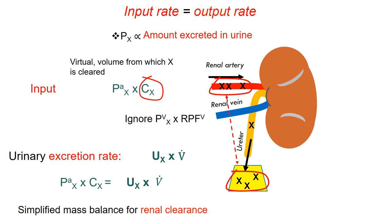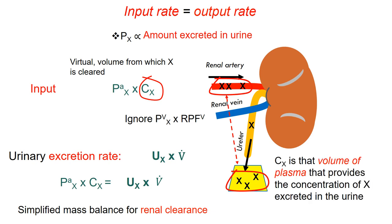At this point, I want to point out an alternative definition for renal clearance which may make more sense. CX, the cleared volume, is also that volume of plasma that will originally provide the concentration of the substance X to be excreted in the urine. The two definitions are the same, but the second one is perhaps more easy to understand.